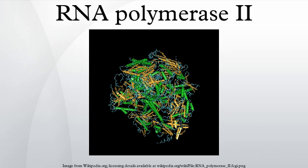RPB3, the third largest subunit, exists as a heterodimer with another polymerase subunit, POLR2J, forming a core subassembly. RPB3 strongly interacts with RPB1 through RPB5, 7, and 10 through 12.